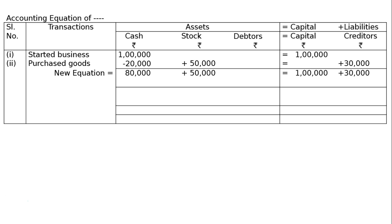The third transaction: sold goods for cash costing ₹10,000 and on credit costing ₹15,000, both at a profit of 20%. For the cash sale: ₹10,000 + 20% of ₹10,000 = ₹2,000, so add ₹12,000 to cash. For the credit sale: ₹15,000 + 20% of ₹15,000 = ₹3,000, so add ₹18,000 to debtors. Total cost of goods sold is ₹10,000 + ₹15,000 = ₹25,000, deducted from stock. The profit of ₹5,000 (i.e., ₹30,000 − ₹25,000) is added to capital.